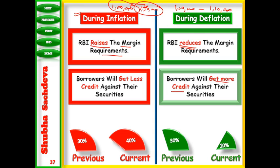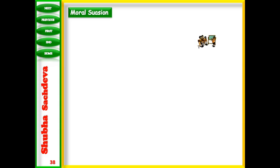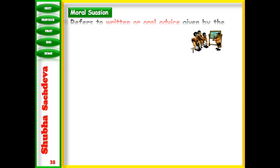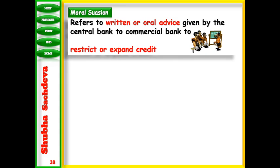This is the example we can take when talking about inflation or deflation regarding margin requirement. Another qualitative measure is moral suasion. Moral suasion is like giving advice or suggestions to the commercial banks — it can be written or oral. The central bank gives advice to restrict or expand credit, either increasing or reducing loans in the economy.